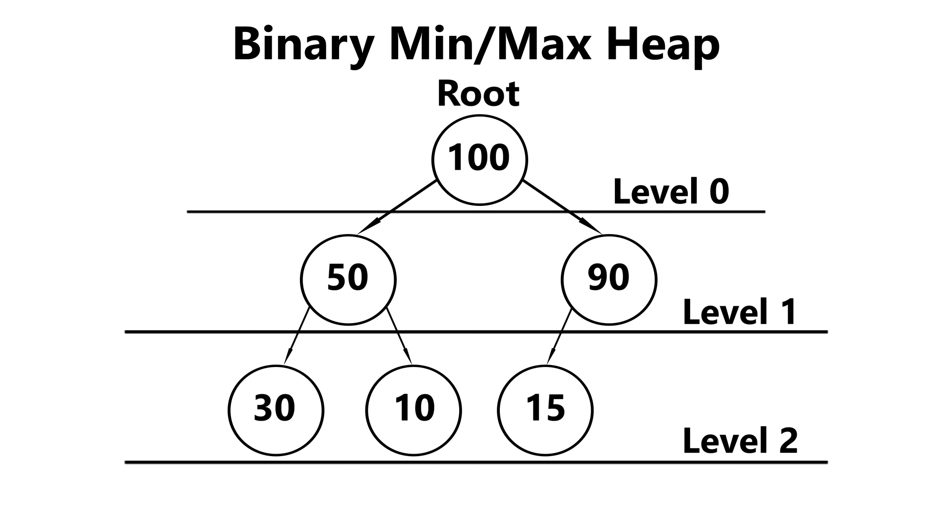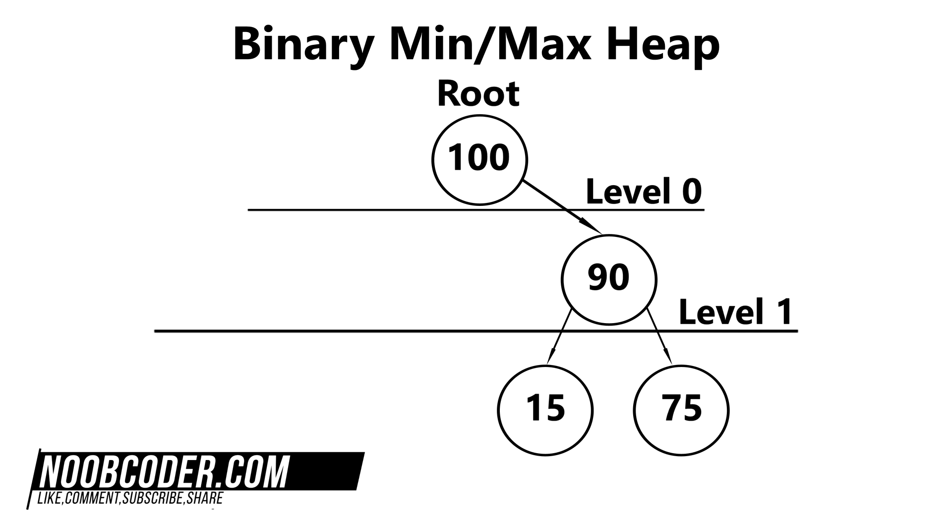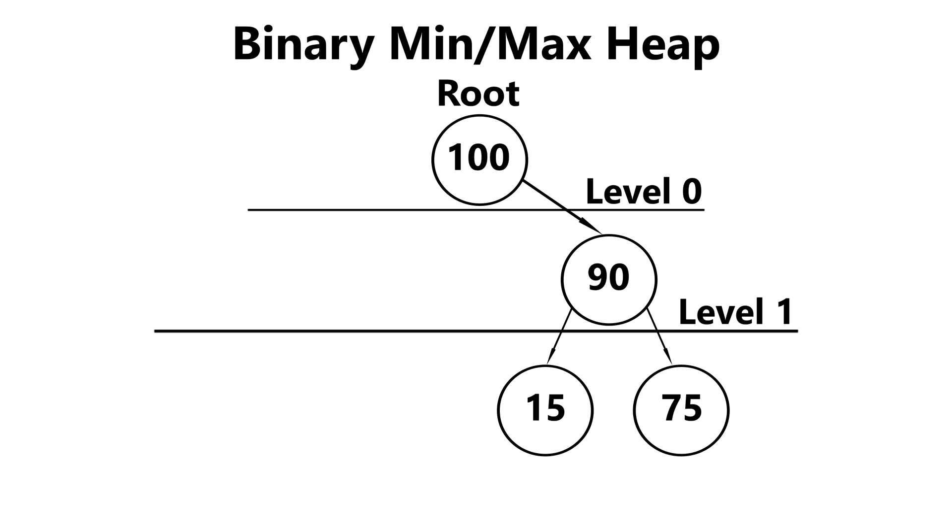To give an example of a non-complete tree, we have the following. Level zero is full. Level one is not full. But it has to be, since it's not the last level within our tree. It also has a node at the rightmost side when it should be at the leftmost side. And you can't have that. You must always go from top to bottom, left to right. So this isn't considered a complete tree.